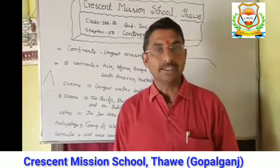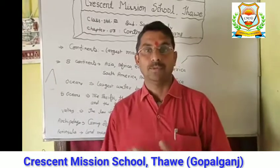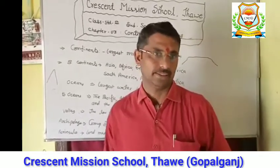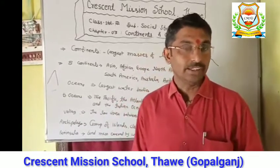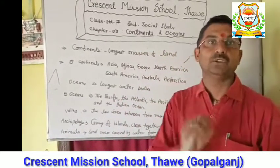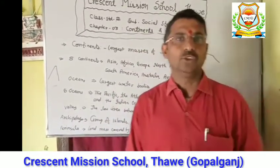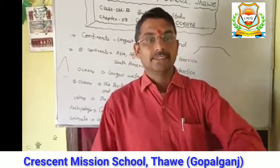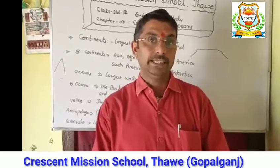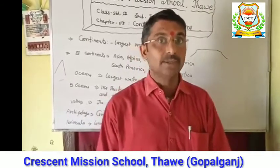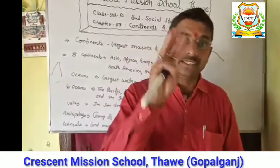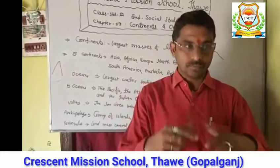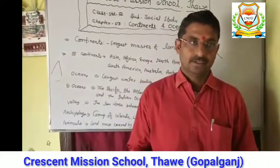Another land structure related to water bodies is the peninsula — in Hindi, 'praedvip'. While an island is a land mass surrounded by water on all sides, a peninsula is a land mass surrounded by water on only three sides.